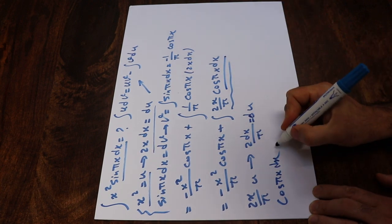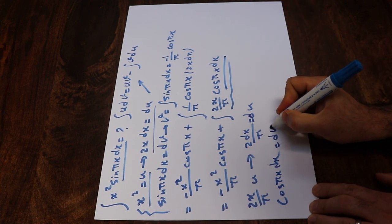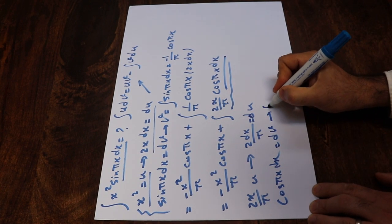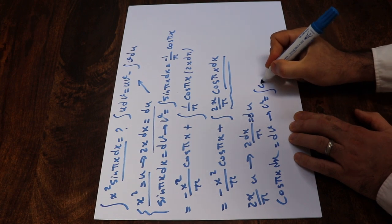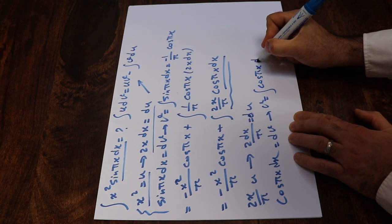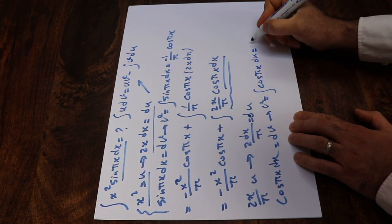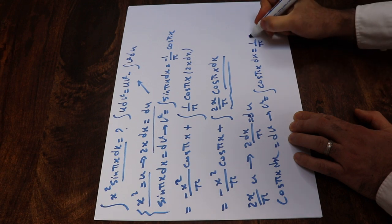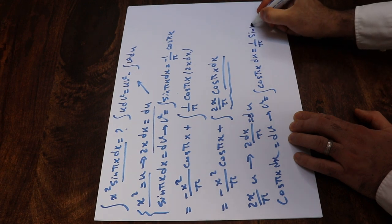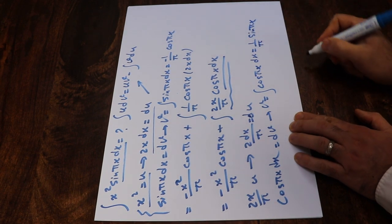therefore v will be equal to the integral of cosine(πx) dx, which will be equal to 1 divided by π times sine(πx).